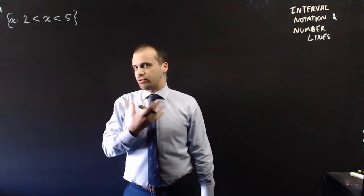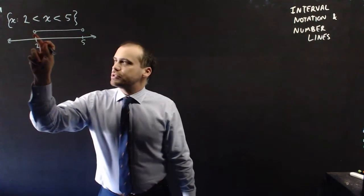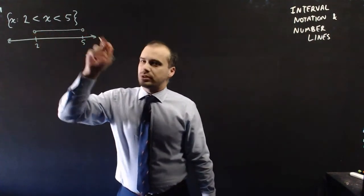On a number line, we draw it like this. So all of the values between 2 and 5, but an open circle here and an open circle here, because I'm not including 2 and I'm not including 5.